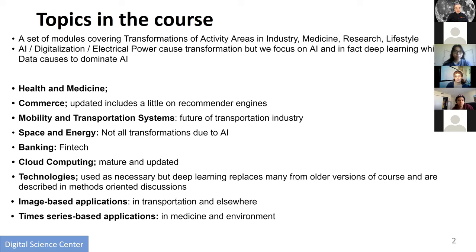In the transportation industry there were at least two major technologies transforming it. One is AI — you could say Uber is not necessarily all AI. Uber and Lyft also have a very elegant digital app that allows them to work well. In the case of space and energy, requested by a student, there was a lot of transformation. The major transformation is due to privatization of space; in energy, it's mainly due to renewable energy. They're both transforming dramatically.